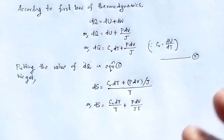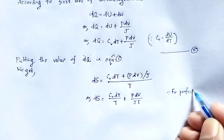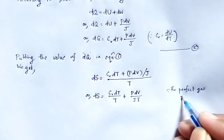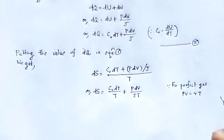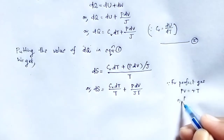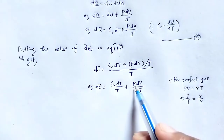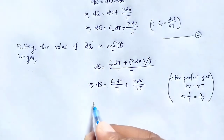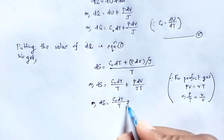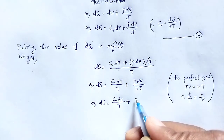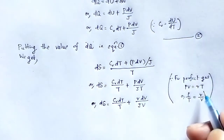Since for a perfect gas, PV equals RT, we get P by T equals R by V. Substituting R by V in place of P by T, we get dS equal to Cv DT by T plus R DV divided by JV.